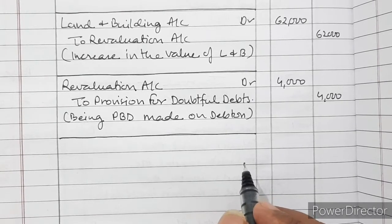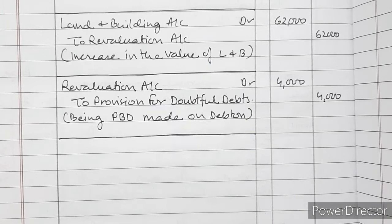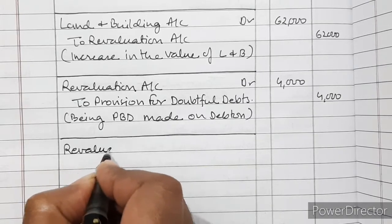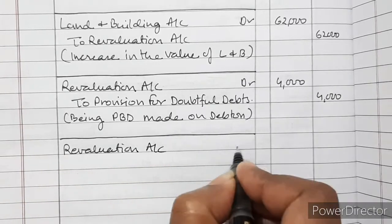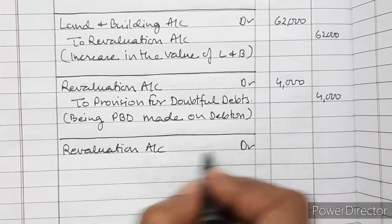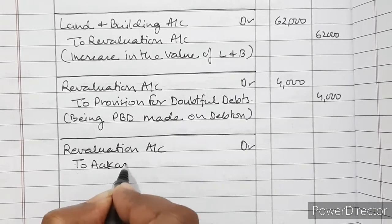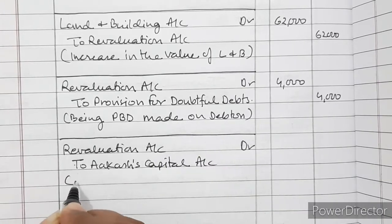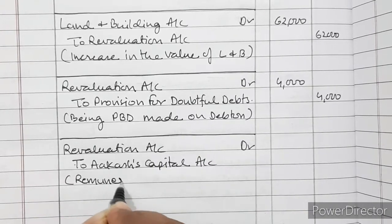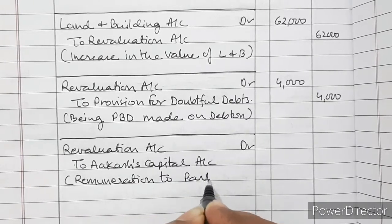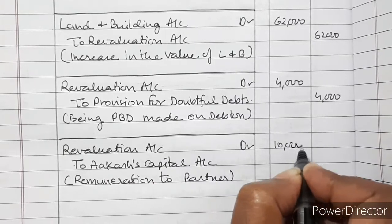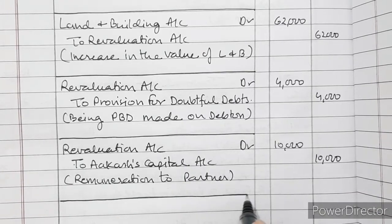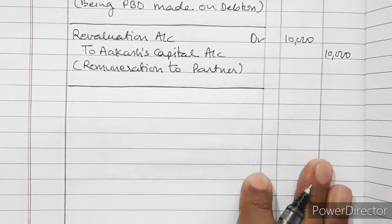Akash was to carry out reconstitution of the firm at a remuneration of Rs. 10,000. So Revaluation Account debited to Akash's Capital Account. Now, after this, we will calculate profit or loss on revaluation of assets and liabilities.